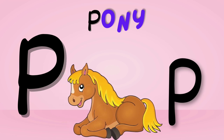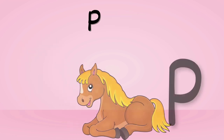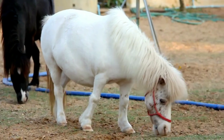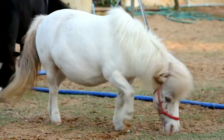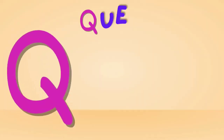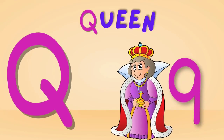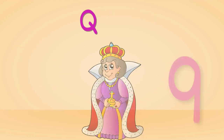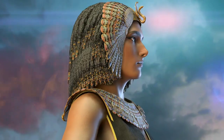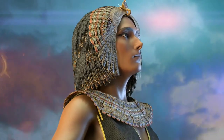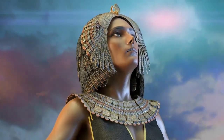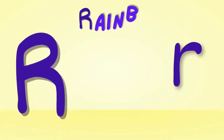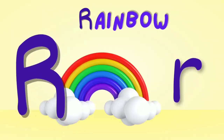P is for Pony. Pony, pony — this is a pony. Q is for Queen. Queen — this is a queen.